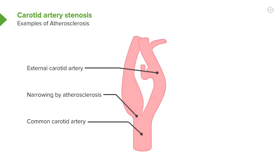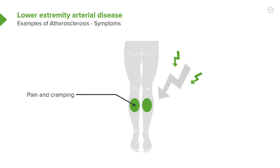Eventually when there's a complete blockage in that artery, the stroke won't get better. In the lower extremity — that is, in the legs — patients develop so-called intermittent claudication: intermittent pain and cramping while walking that goes away with rest.